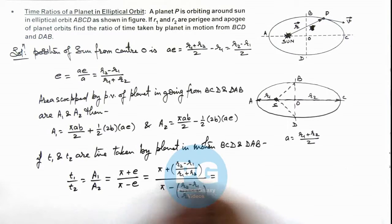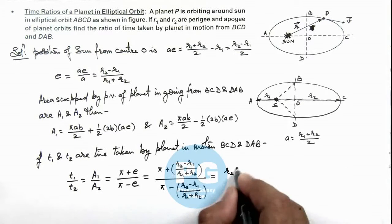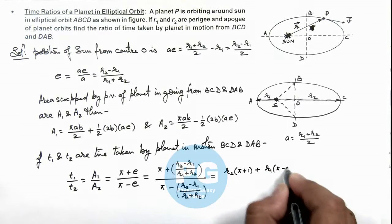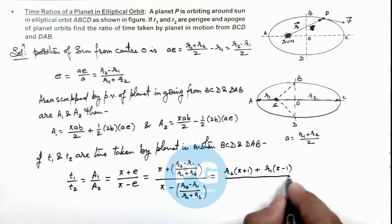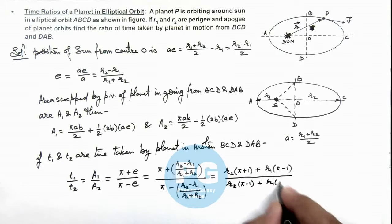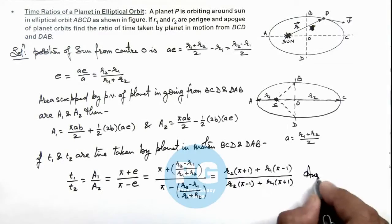So on simplifying this, we'll get r2 multiplied by π plus 1, plus r1 multiplied by π minus 1, divided by r2 multiplied by π minus 1 plus r1 multiplied by π plus 1. That is the result of this problem.